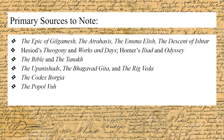Some important texts to note include the Popol Vuh, a Mayan text; the Codex Bourgeois, an Aztec codex; Hesiod's Theogony and Homer's Iliad and Odyssey, which are Greek texts; the Epic of Gilgamesh, the Atra Hasis, the Enuma Elish, and Ishtar's Descent into the Underworld, which are Mesopotamian texts; the Bible and the Tanakh, which are Judeo-Christian texts; and the Bhagavad Gita, Upanishads, and Rig Veda, which are Hindu texts.